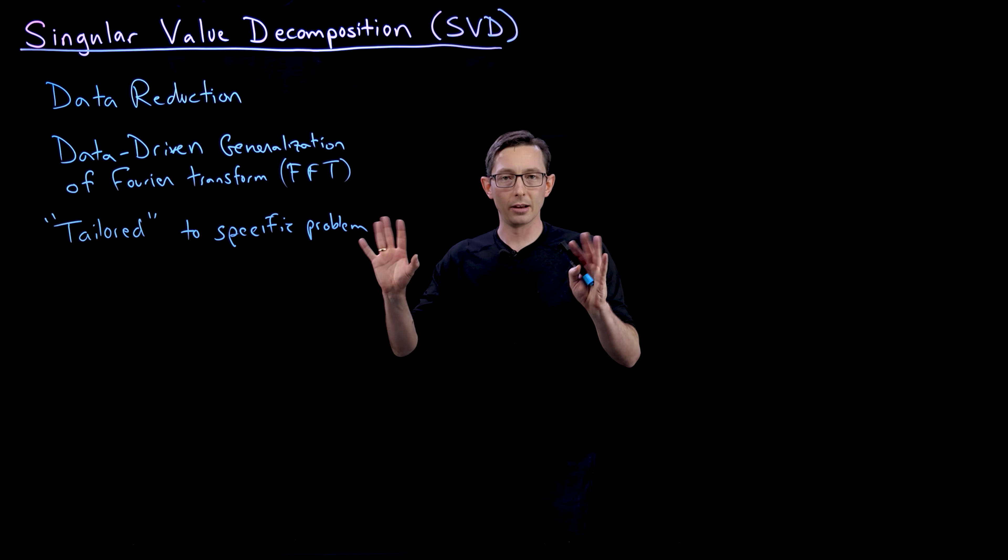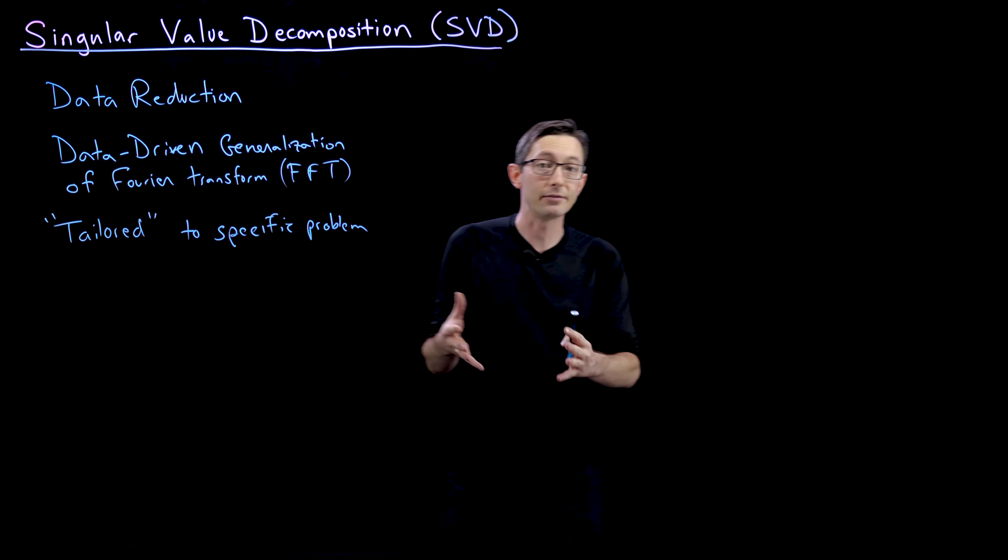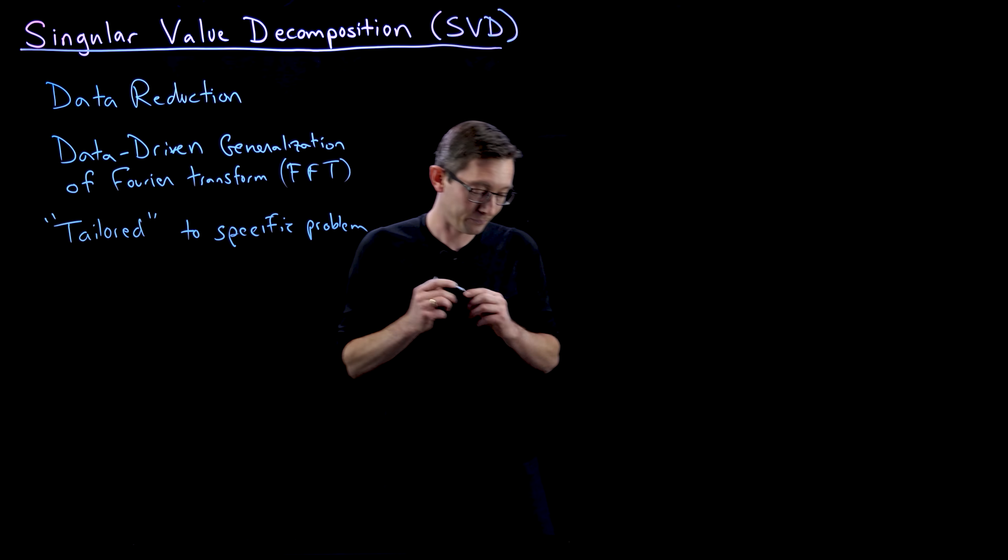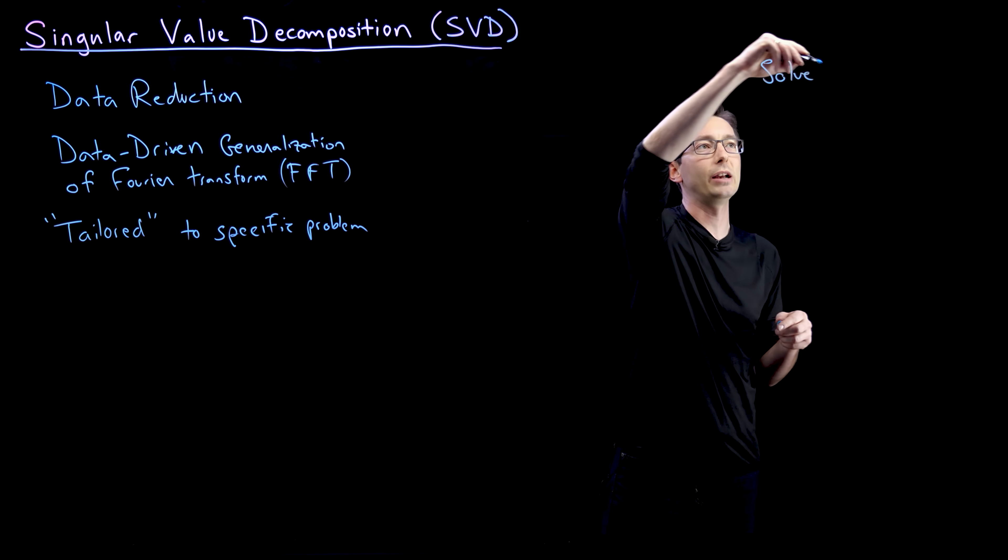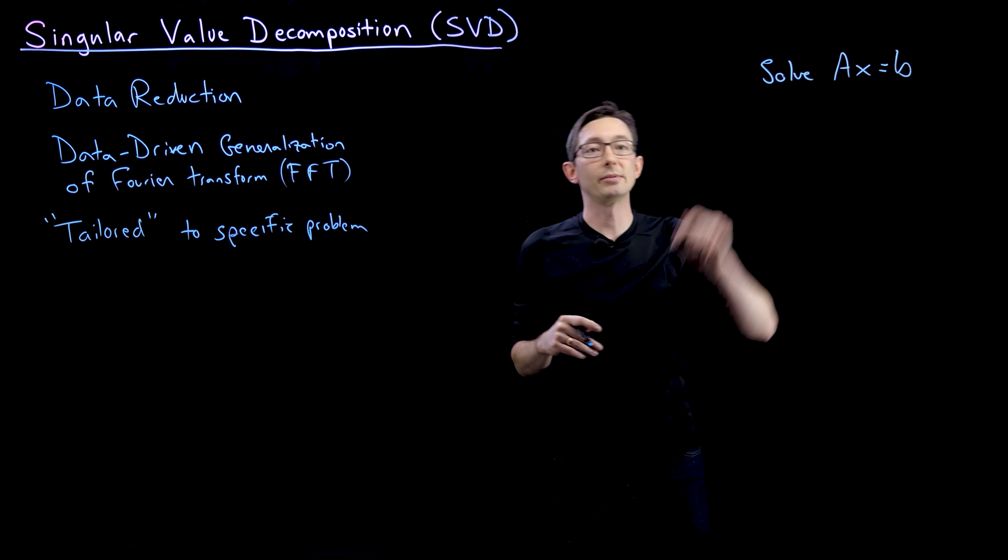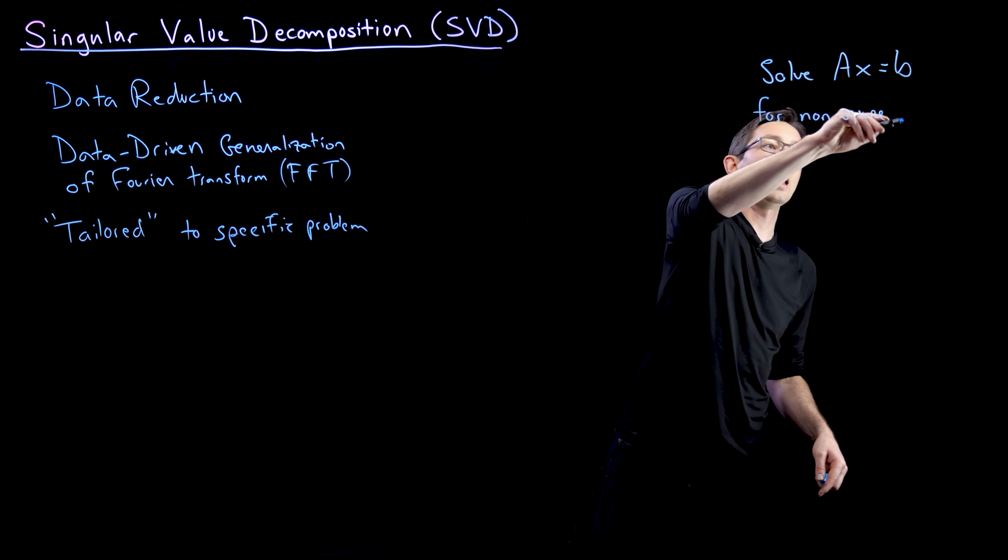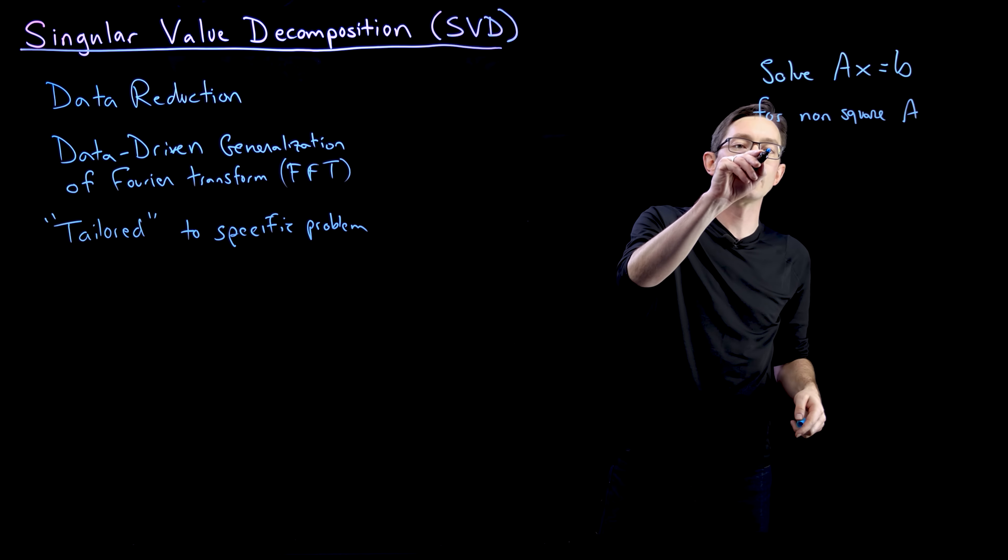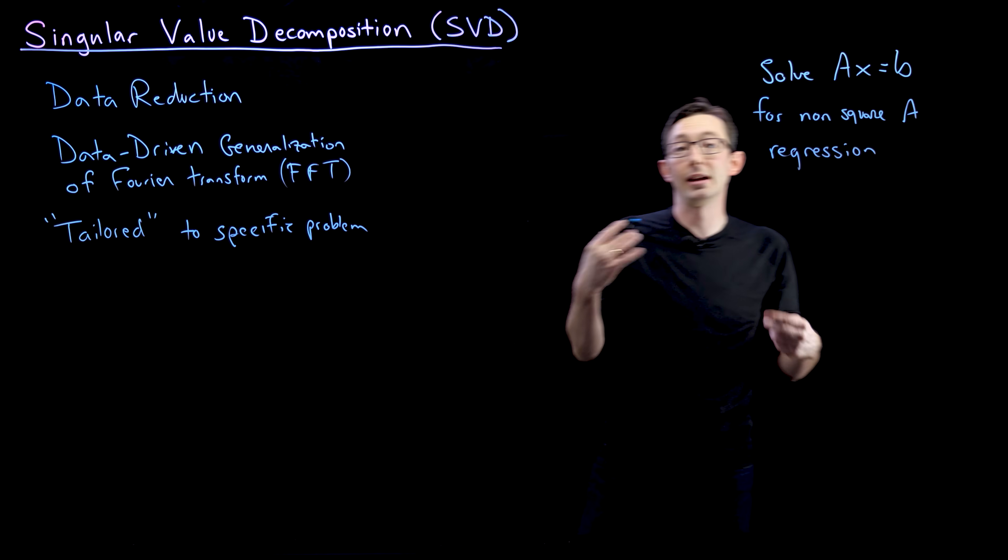In the next lecture, I'm going to go through actually defining a data matrix, how you compute the SVD and what it means. Here, I just want to tell you kind of how you can use it. So one thing you can do is you can use it to solve matrix system of equations A X equals B. So linear systems of equations for non-square A matrices.